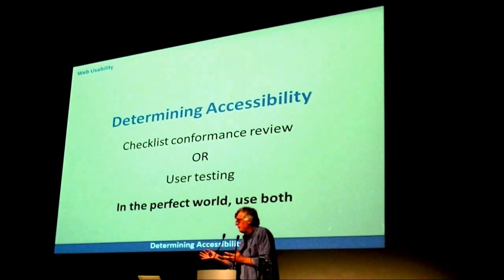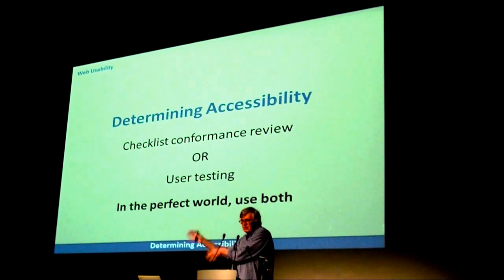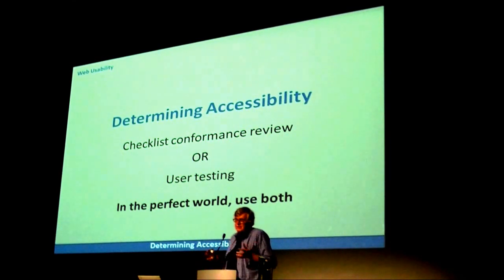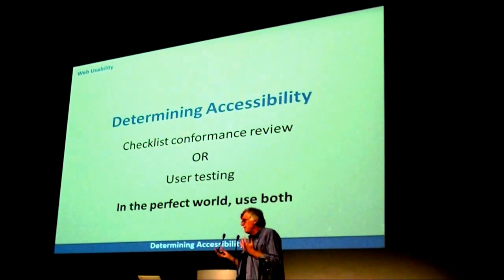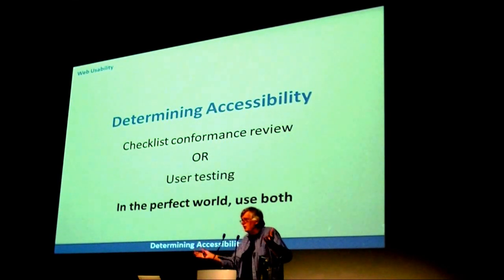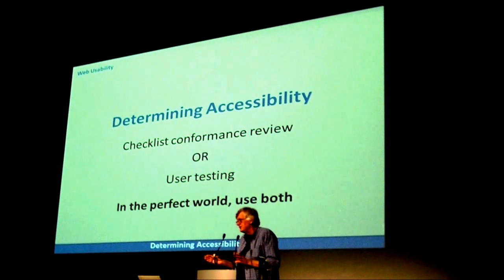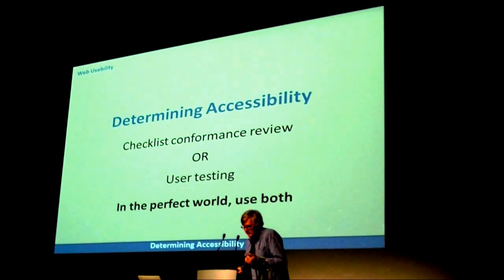A site gets roundly condemned as totally inaccessible because the headings aren't properly nested or there are two missing alt texts — off to the guillotine. Or at the other extreme, someone will declare without any doubt that their site is 100% accessible because one person tested it with one version of one screen reader and had no problems. Those are the two extremes, but I come across those experiences all the time.